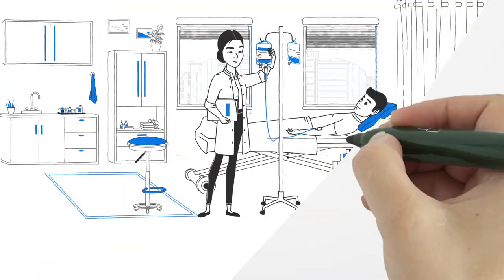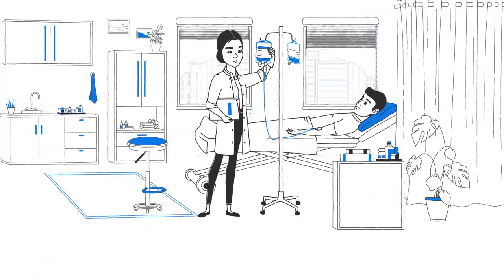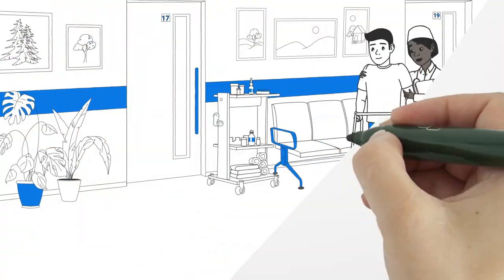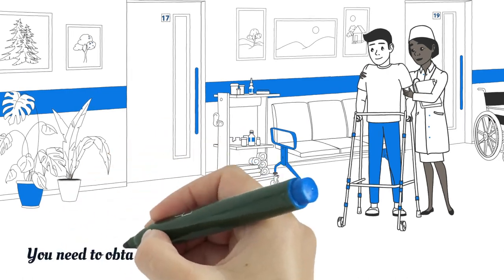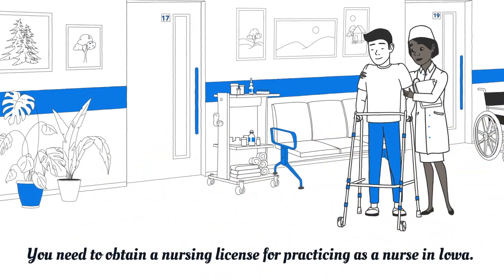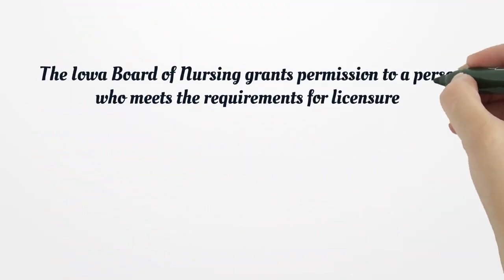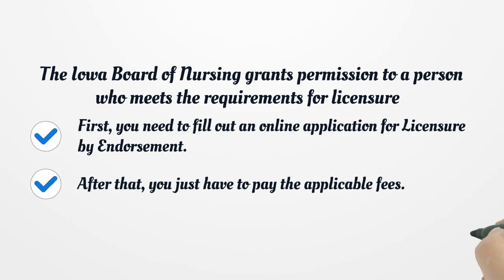Iowa Nursing License. You need to obtain a nursing license for practicing as a nurse in Iowa. The Iowa Board of Nursing grants permission to a person who meets the requirements for licensure. First, you need to fill out an online application for licensure by endorsement.